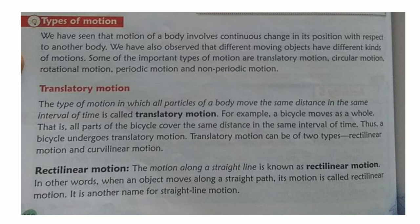First is translatory motion. The type of motion in which all particles of the body move the same distance in the same interval of time is called translatory motion. For example, a bicycle moves as a whole — all parts of the bicycle cover the same distance in the same interval of time. Thus, a bicycle undergoes translatory motion.